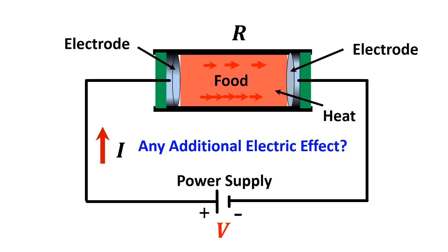Hall and Trout in 1968 stated that some studies had concluded that there was no additional effect of electricity on bacterial killing, other than the effect of heat generated by electric current. It is still not clearly known whether there is a separate electrical effect, if any, in addition to thermal effects on bacterial lethality.